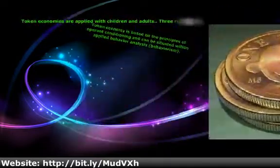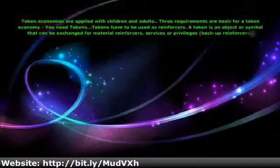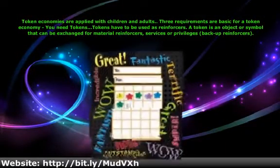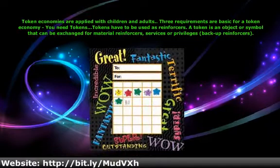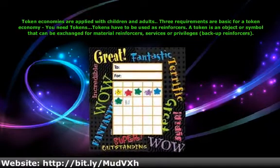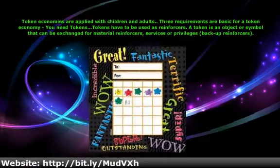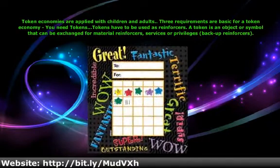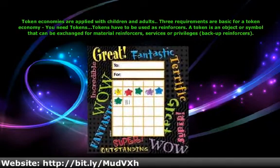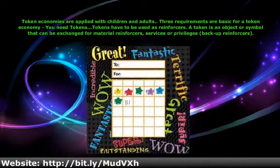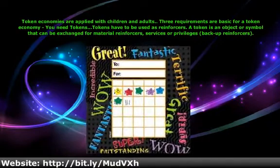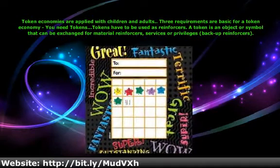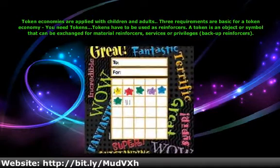Token economies are applied with children and adults. Three requirements are basic for a token economy. You need tokens. Tokens have to be used as reinforcers. A token is an object or symbol that can be exchanged for material reinforcers, services or privileges — backup reinforcers.